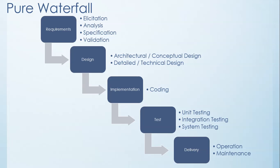The first thing you have to understand about the waterfall model is that it is very document driven. That means the main work carried out from phase to phase are documents, and these documents are necessary to move from one phase to another. You also have to understand that the phases are discontinuous — that means they don't overlap.